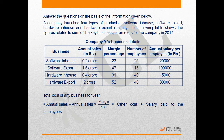This set is based on simple calculation. A company launched four types of products: software in-house, software export, hardware in-house, and hardware export. The following table shows figures related to some key business parameters for the company in 2014. There are four parameters: annual sales (given in rupees), margin percentage, number of employees, and annual salary per employee.